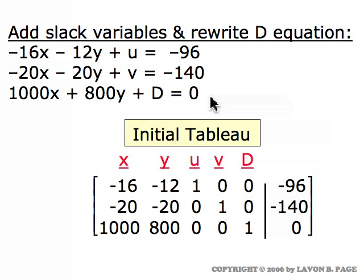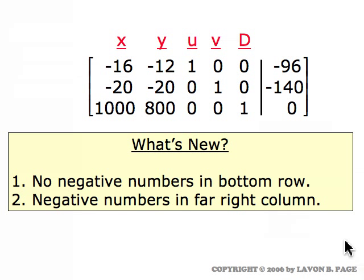Notice that the initial tableau is different from a standard problem: there are no negative numbers in the bottom row to start with, but there are negative numbers on the far right. With a standard problem we'd grab the most negative number from the bottom row first, but here we can't do that. Even if there were a negative in the bottom row, as long as negatives exist on the far right, we focus on those first — they tell us how to begin the process.